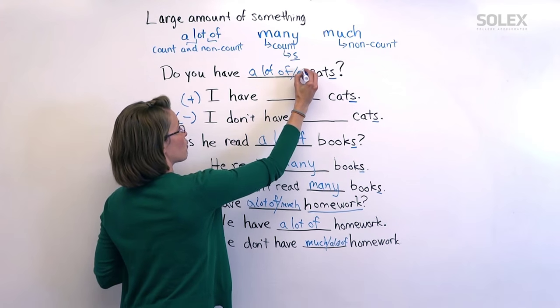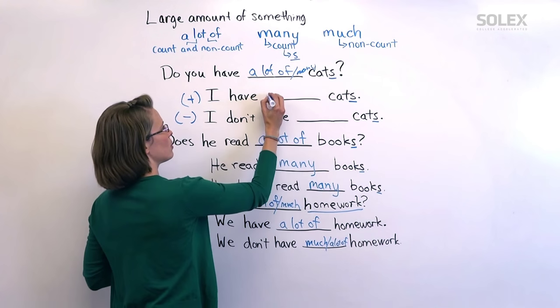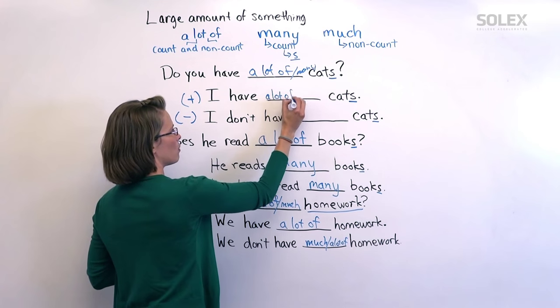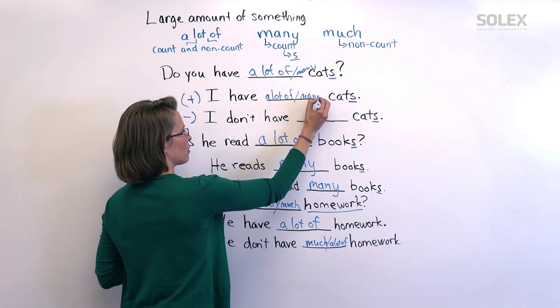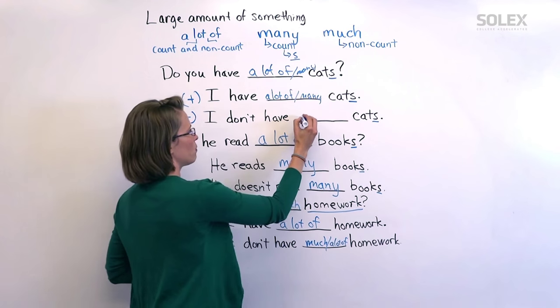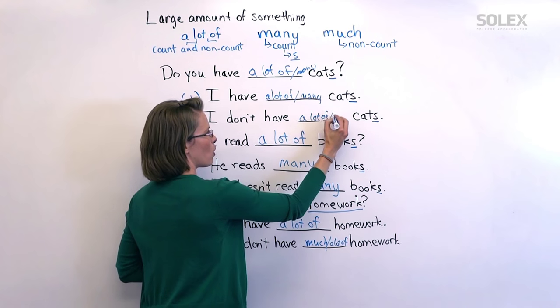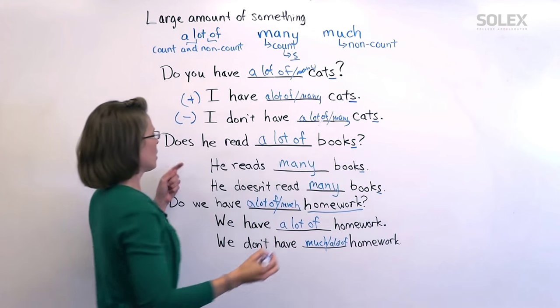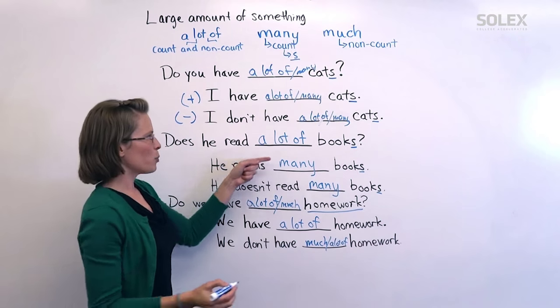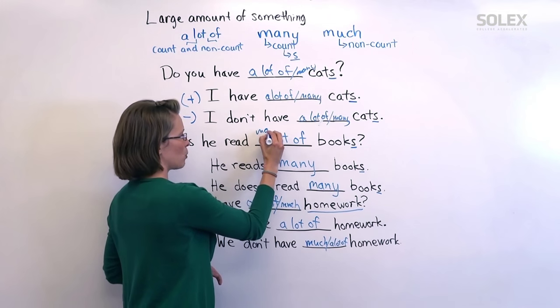This one can use a lot of or many. This one can use a lot of or many. I don't have a lot of, oops, a lot of or many. Does he read a lot of books? Same thing and many.